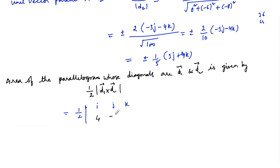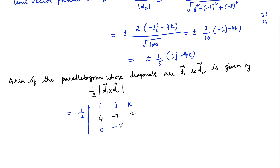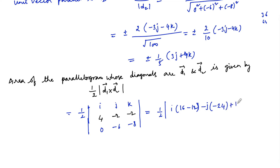Setting up the determinant with i, j, k: the scalar components of d1 are 4, -2, -2 and the scalar components of d2 are 0, -6, -8. Expanding: i((-2)(-8) - (-2)(-6)) - j((4)(-8) - (-2)(0)) + k((4)(-6) - (-2)(0)) = i(16 - 12) - j(-32) + k(-24) = 4i + 32j - 24k.